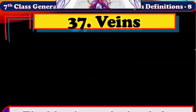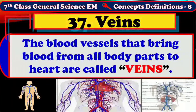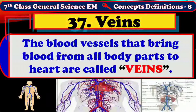The blood vessels that bring blood from all body parts to the heart are called veins. Veins are also known as collecting blood vessels. Generally, all veins carry impure blood or deoxygenated blood, except pulmonary veins. Pulmonary veins carry pure blood or oxygenated blood to the lungs. The veins that carry impure blood are called systemic veins.